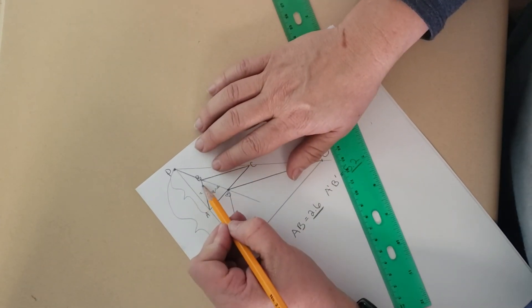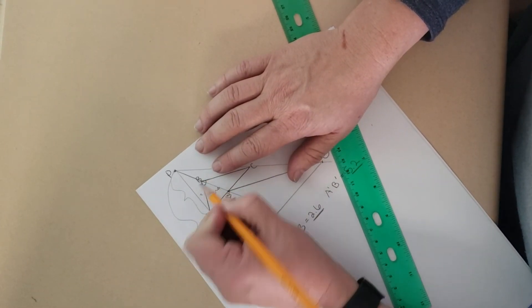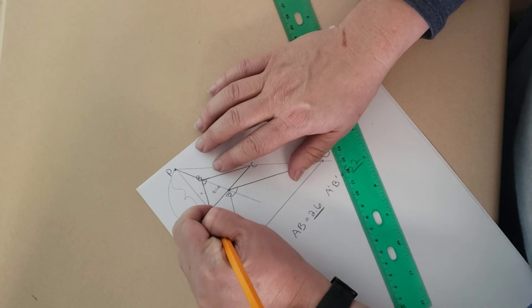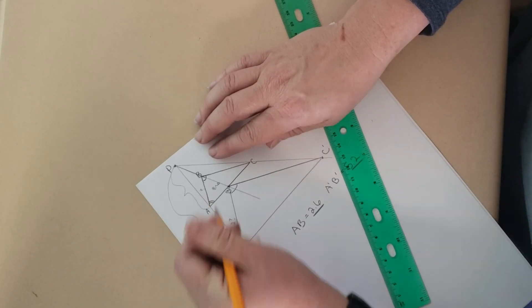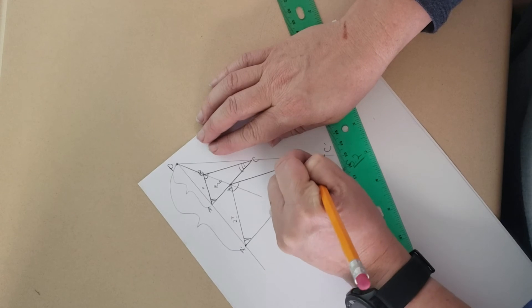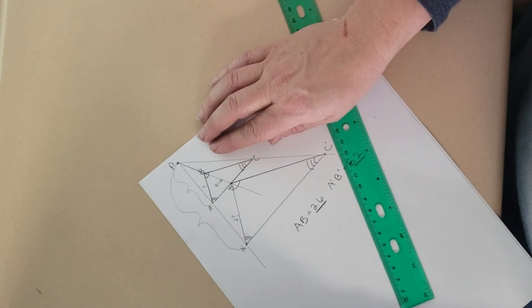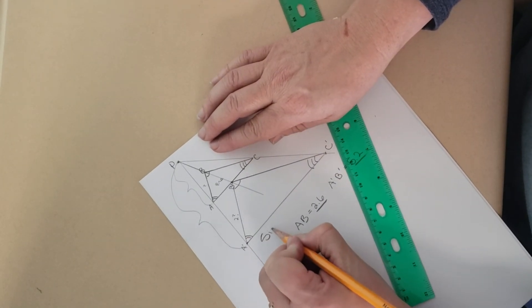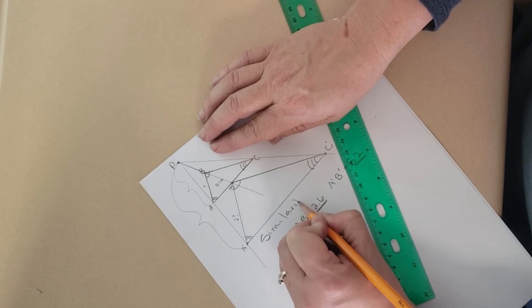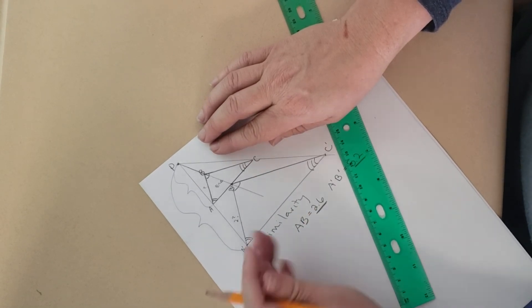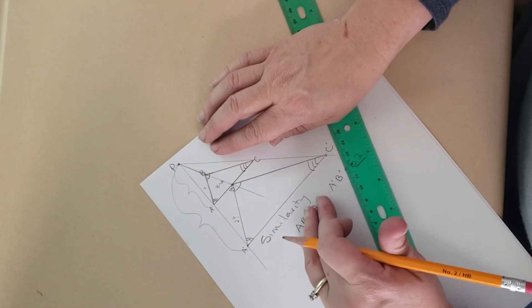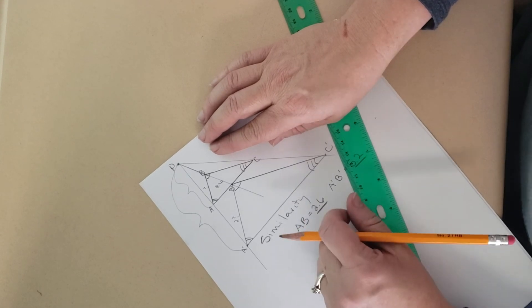Now, one other thing that I'd like to mention is that this angle, it is congruent to that angle. This angle is congruent to that angle. And this last angle is congruent to that angle as well. And this is called similarity. They are similar because I dilated them in this fashion. I forced them to be similar.